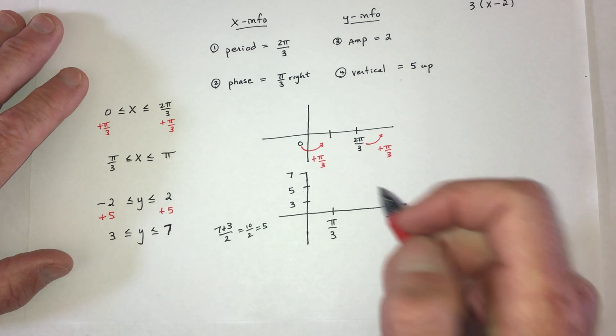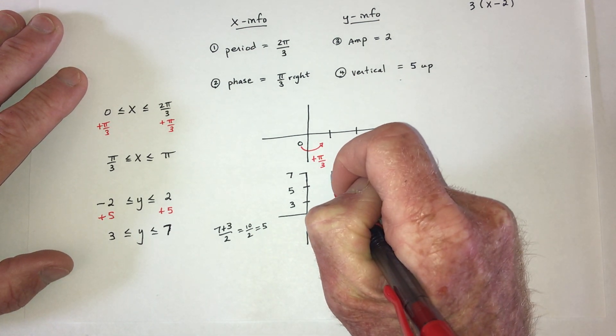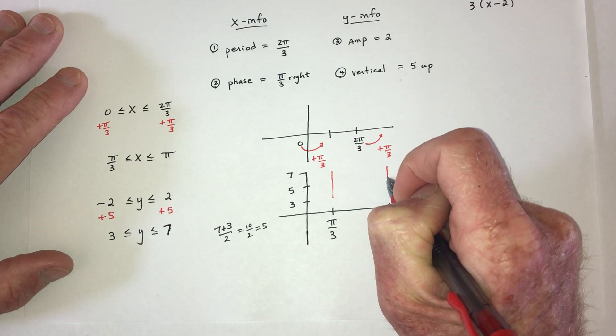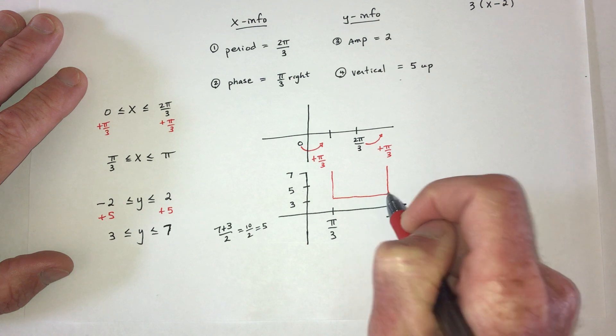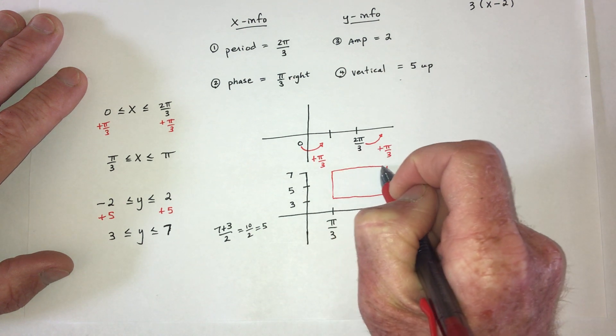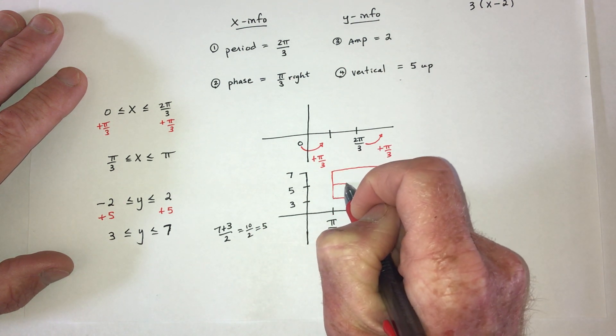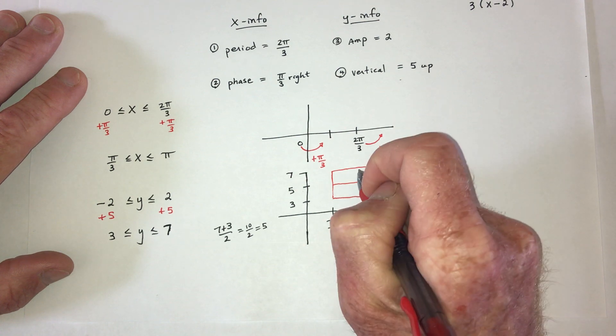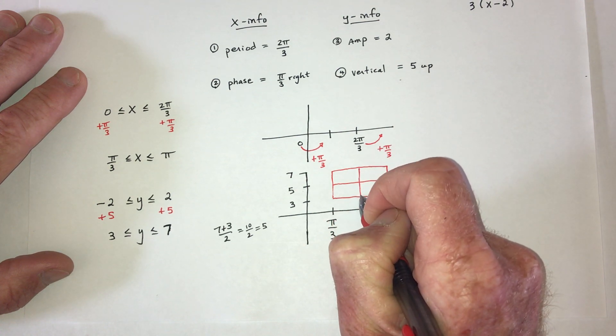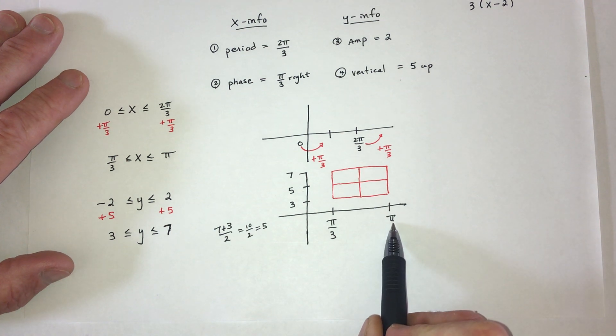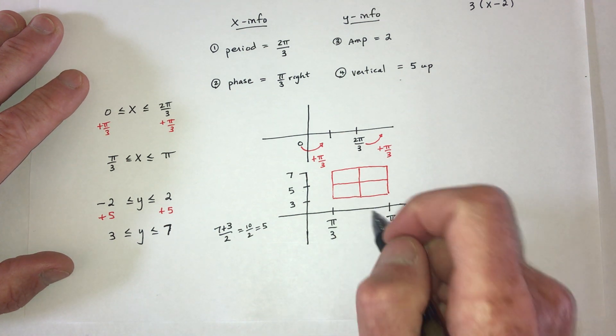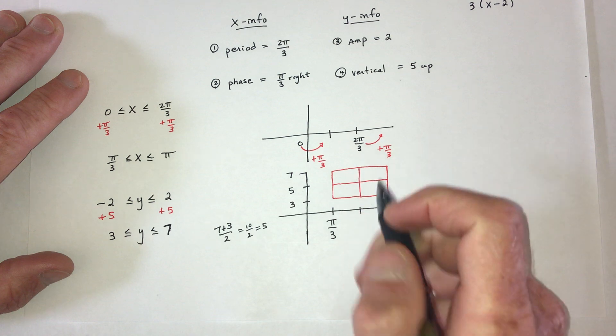So this is 10 divided by 2, or in other words, 5. And that is this number right here. So whatever that is, that's going to be this middle number 5. So then I'm going to draw the box. So as far as the x's, it goes between this number and this number. As far as the y's, it goes between 3 and 7, with 5 in the middle. And then right in the middle right here. Well, this is 3 π over 3, and this is 1 π over 3. So in the middle is 2 π over 3.